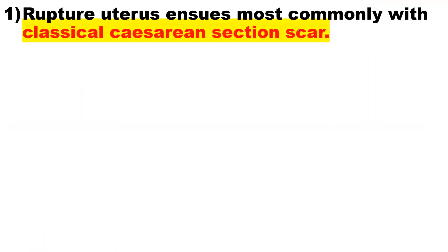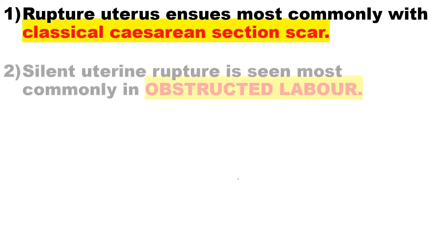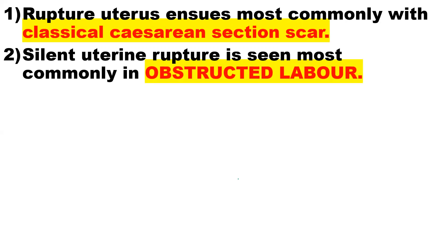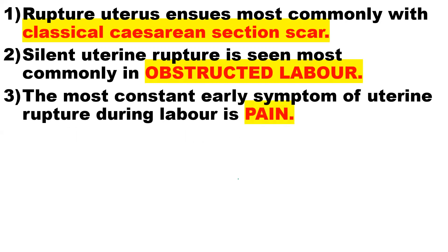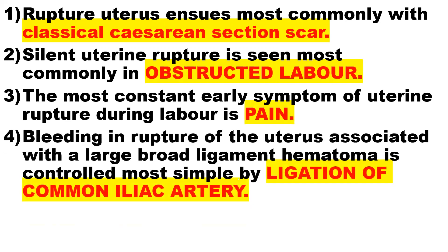Point 1: Uterine rupture most commonly occurs with classical caesarean section scar. Point 2: Silent uterine rupture most commonly occurs in obstructed labor. Point 3: The most constant early symptom of uterine rupture during labor is pain. Point 4: Bleeding in rupture of the uterus associated with a broad ligament hematoma is controlled most simply by ligation of the common iliac artery.